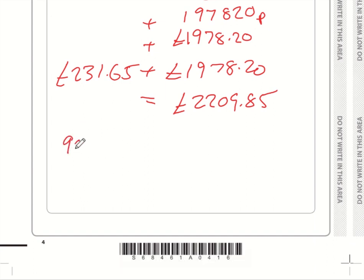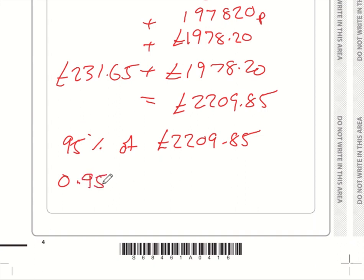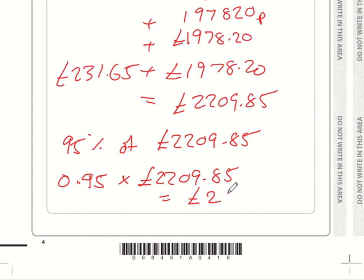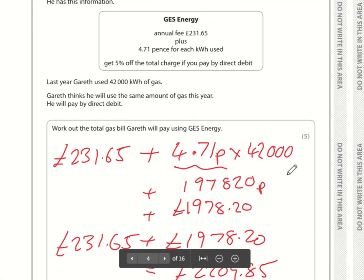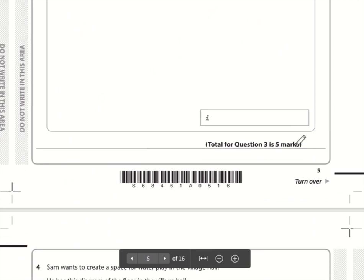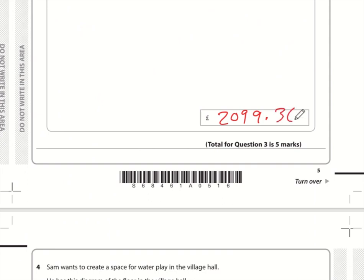He gets a 5% discount, meaning he pays 95%. The percentage multiplier is 0.95 — that's 95 divided by 100. So 0.95 multiplied by 2,209.85 gives approximately £2,099.3575. Since this is a price, we round to two decimal places. The 5 rounds up to 6 because the next digit is 7. So the total gas bill is £2,099.36.